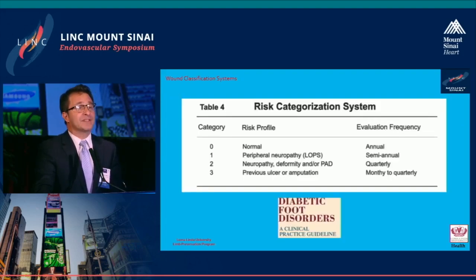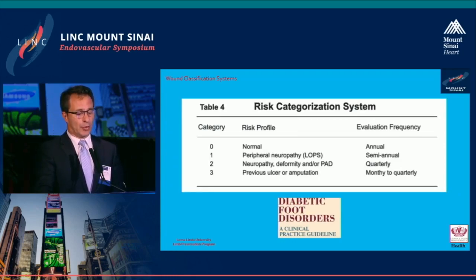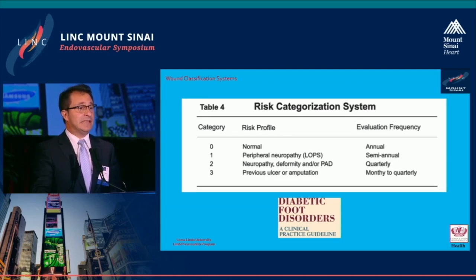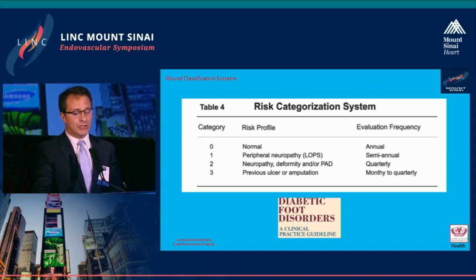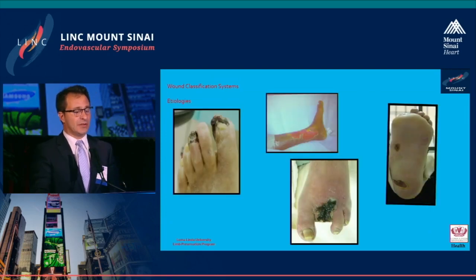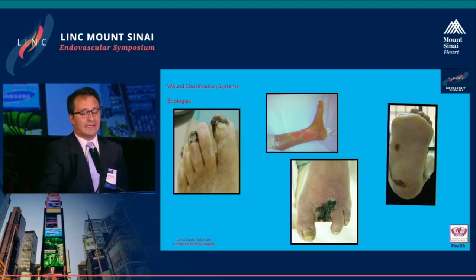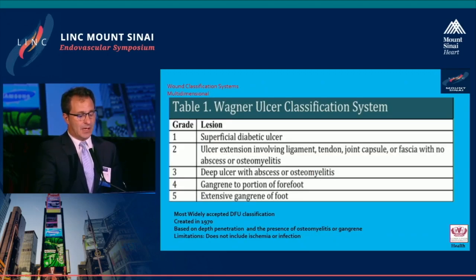For the diabetic foot at risk — patients at risk of losing their leg — there is a 0-to-3 category ranging from normal to previous ulcerations or amputations. Based on the score, patients should see the healthcare system annually, semi-annually, quarterly, or monthly. Examples include arterial ulcerations, venous leg ulcerations, surgical wounds that are not healing, and neuropathic ulcerations.